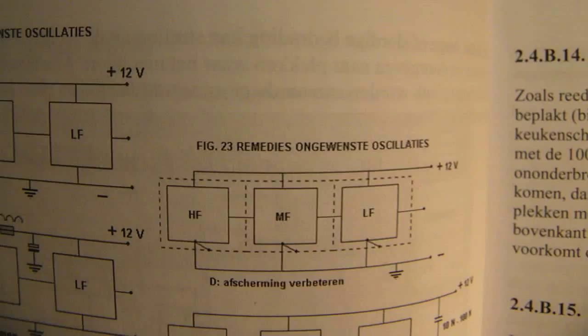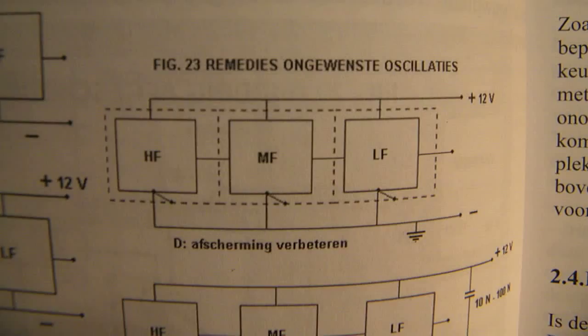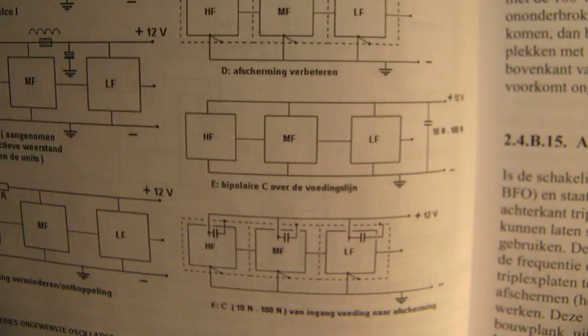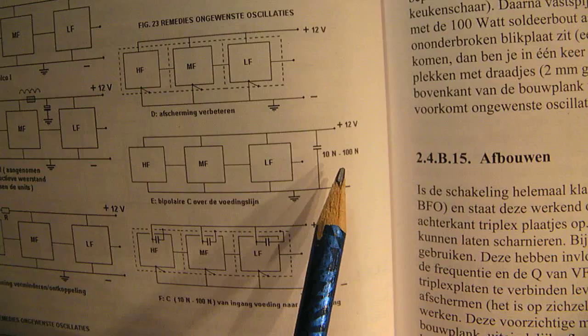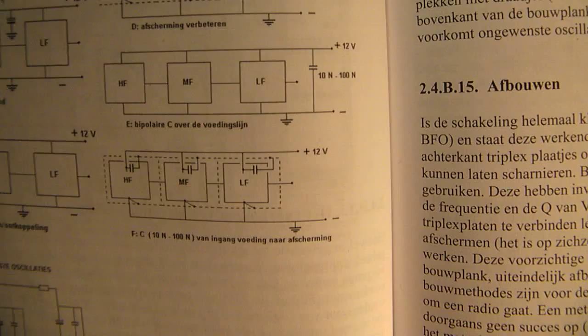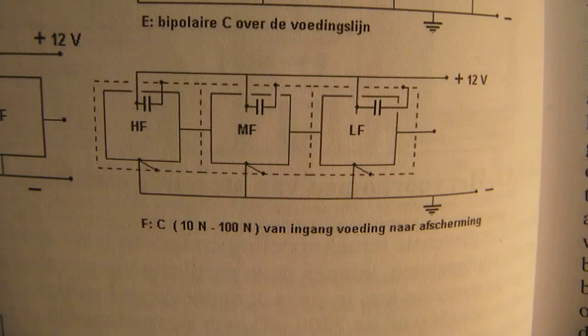Again, more remedies. Improve the shielding with the help of tin plate. Use a bipolar cap in the power supply line. Could also help. 10 nF up to 100 nF, preferred ceramic. And this is the final idea to prevent unwished oscillations.